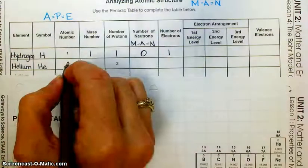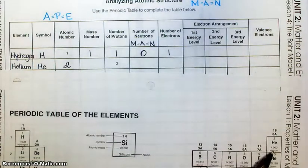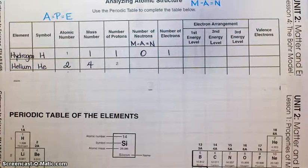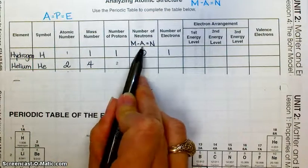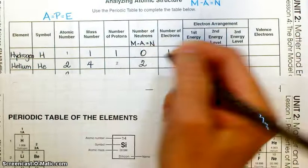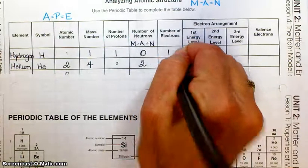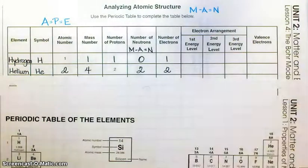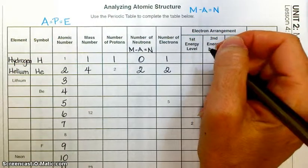Next row: helium, chemical symbol He, atomic number two. The atomic mass shown is 4.003 — that's much closer to 4, so the mass number rounds to 4. There are two protons. Neutrons equals mass number minus atomic number: 4 minus 2 equals two neutrons. Number of electrons equals atomic number, so that gives us two electrons.